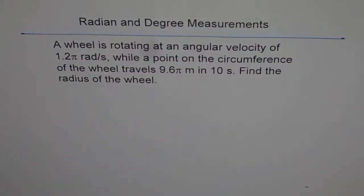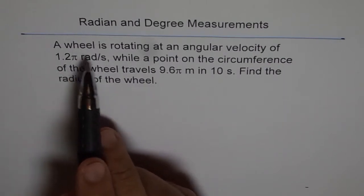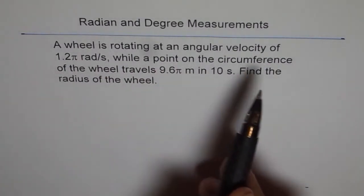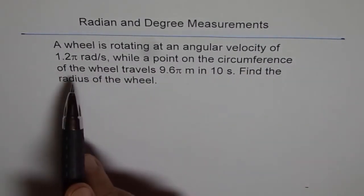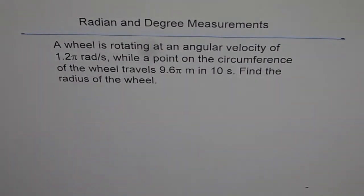Here's a simple application problem on radians and degree measurement. A wheel is rotating at an angular velocity of 1.2π radians per second, while a point on the circumference of the wheel travels 9.6π meters in 10 seconds. Find the radius of the wheel.